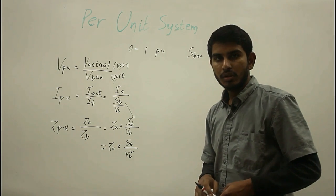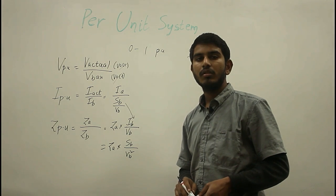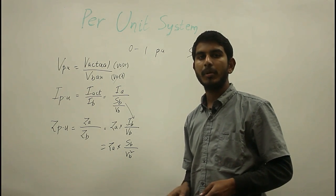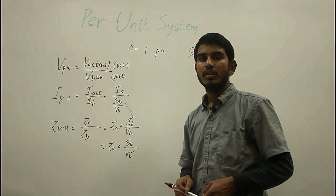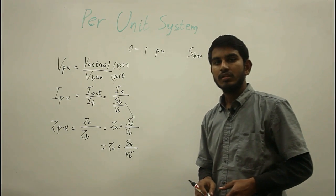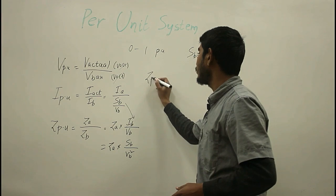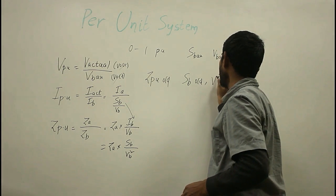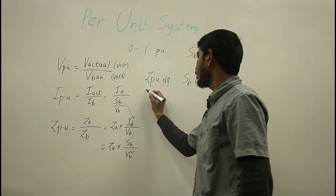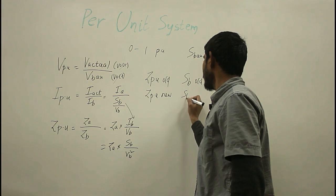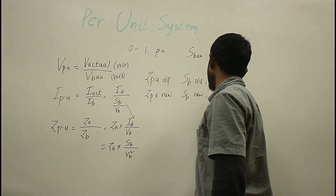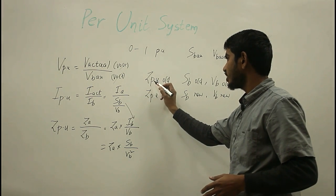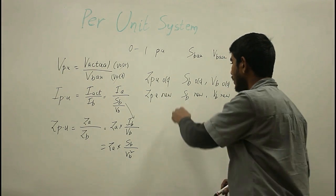Many times when more transformers are involved in a circuit, one is required to form a common base for all of them, and the parameters of those machines must be expressed on that common base. This is a common problem encountered in the parallel operation of two or more transformers. The conversion of base values naturally leads to a change in the value of the parameters. Z per unit old is given on S base old and V base old, and this gets modified to Z per unit new on S base new and V base new.